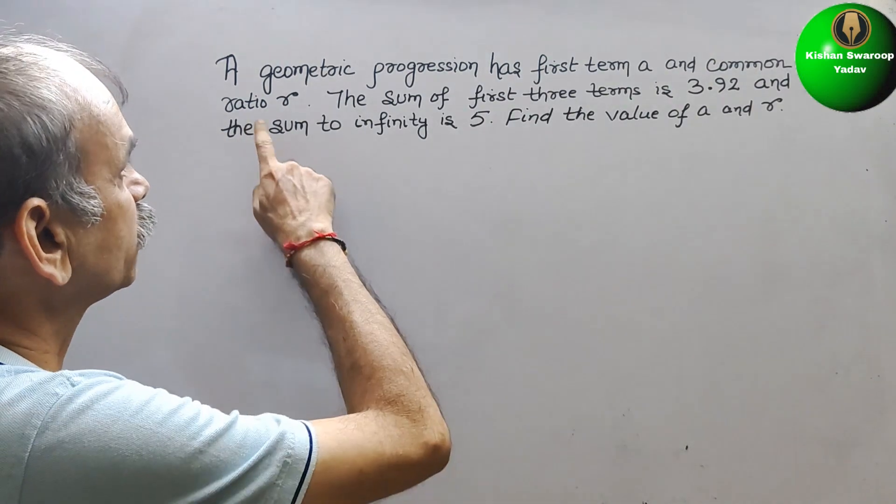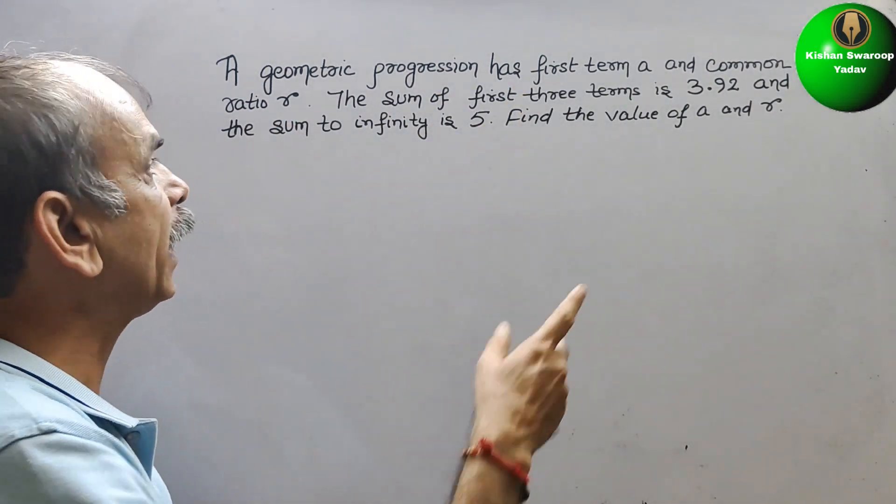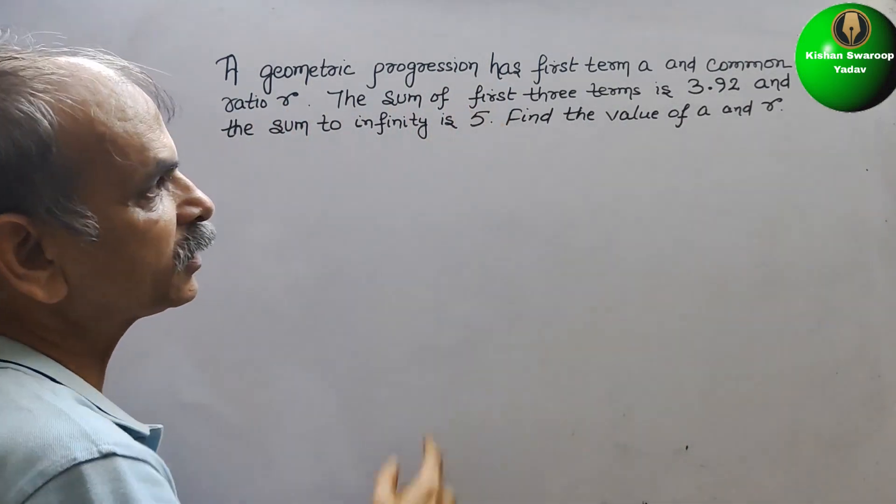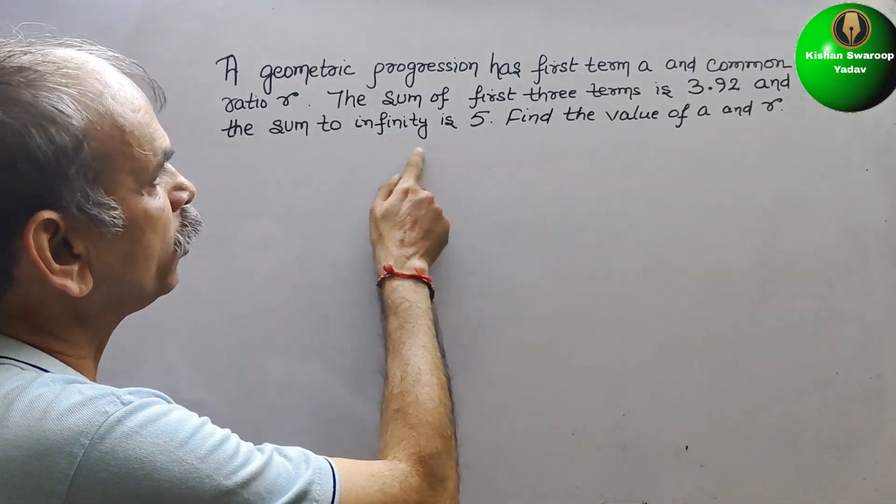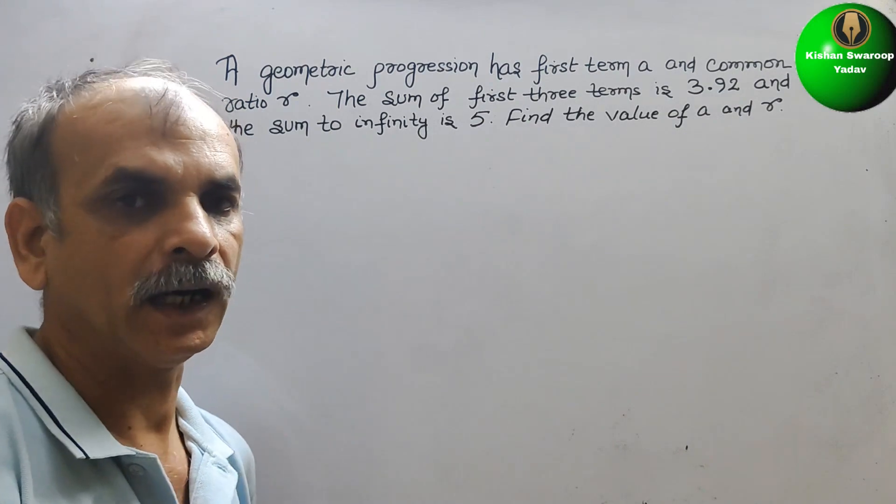Your question is a geometric progression has first term A and common ratio R. The sum of first three terms is 3.92 and the sum to infinity is 5. Find the value of A and R.